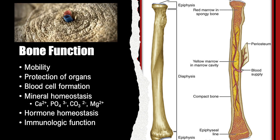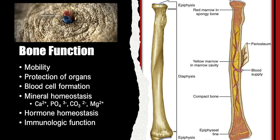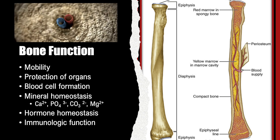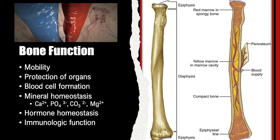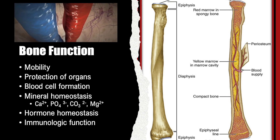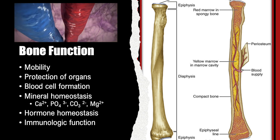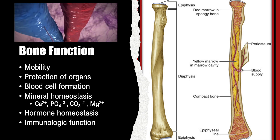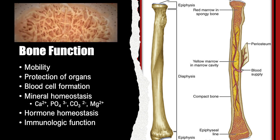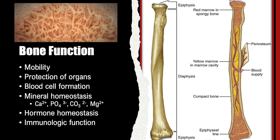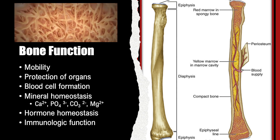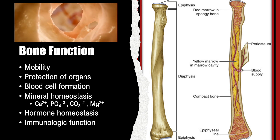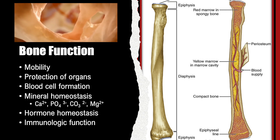Bones also have a crucial role in mineral homeostasis, storing minerals — calcium, phosphate, carbonate, magnesium — that are essential for proper performance of many delicate cellular mechanisms. And they have a role in hormone homeostasis and assist in maintaining normal immunologic function.